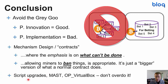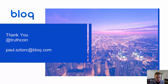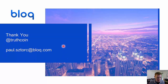We can upgrade Bitcoin script due to segregated witness, so we just have to be careful about exactly what we achieve when we do that. This is my Twitter handle at Truthcoin, and my email address — I'm at Block now. Thanks to Jeff Garzik for giving me a lot of time to make this presentation. See you later.